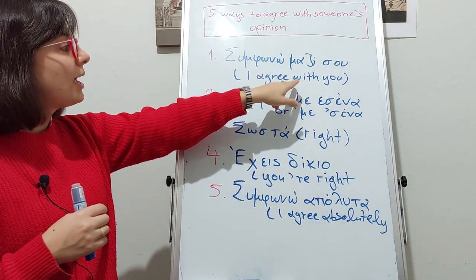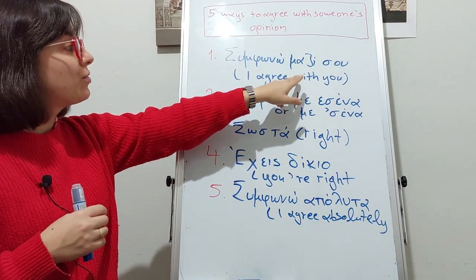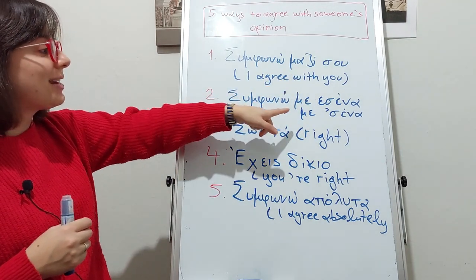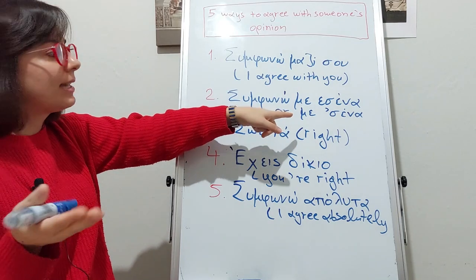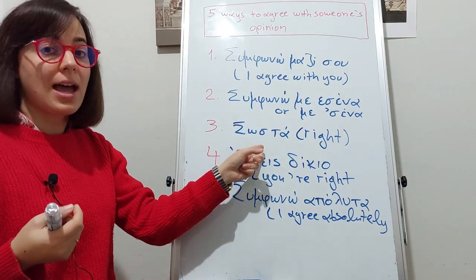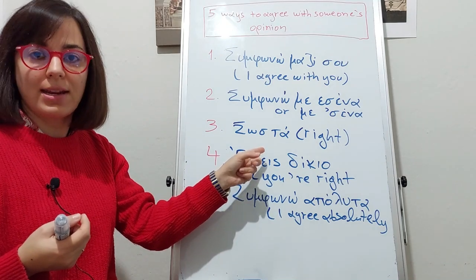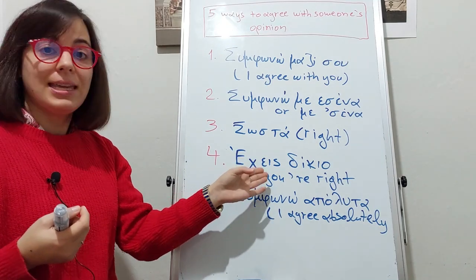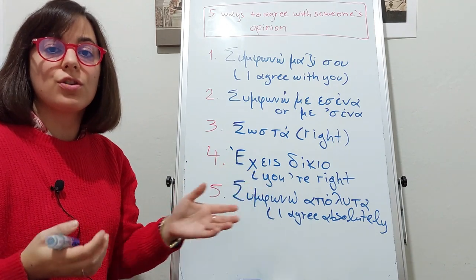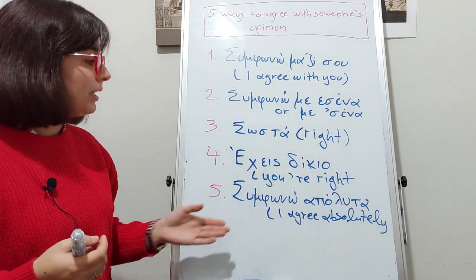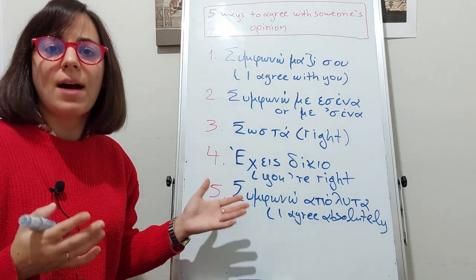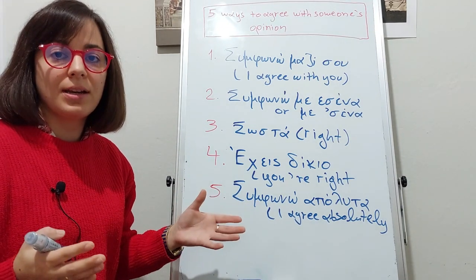Let's review: Συμφωνώ μαζί σου — I agree with you. Συμφωνώ με σένα — I agree with you. Σωστά — Right. Έχεις δίκιο — You are right. Συμφωνώ απόλυτα — I agree, absolutely.